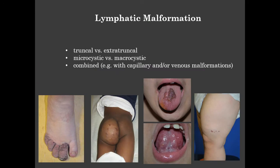They can be truncal or extra-truncal, micro-macrocystic, or combined with capillary venous malformations. Here's a patient who had very severe swelling of his leg and recurrent cellulitis, and the toes felt like sandpaper. He had oozing and infections. It was socially a problem, and he was constantly on antibiotics.